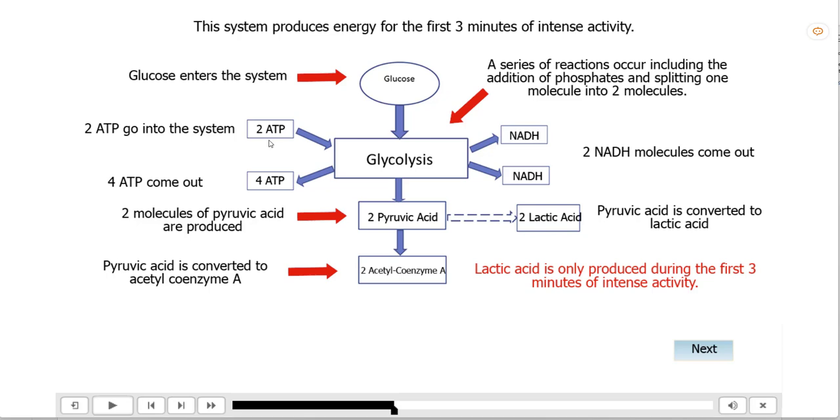Other things that go in are ATP. So gee, we're supposed to make ATP, but now we're putting ATP into the system. You actually have to prime the system by putting a couple of ATP in, but then four come out. So you have a net gain of two ATP for every molecule of glucose that enters. You also get these other energy molecules called NADH. You get a couple of these coming out as well, and we'll talk about what these do in just a couple of minutes. And then what comes out of glycolysis is two molecules of pyruvic acid.